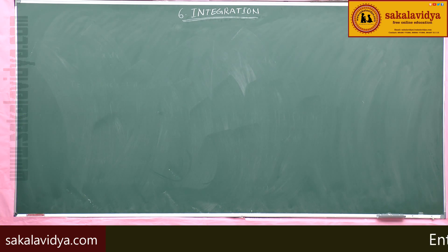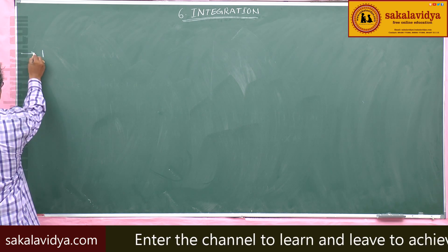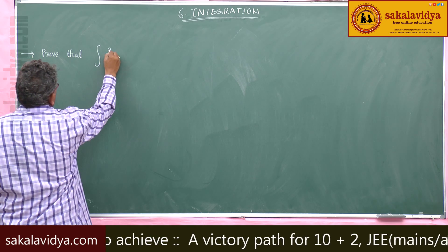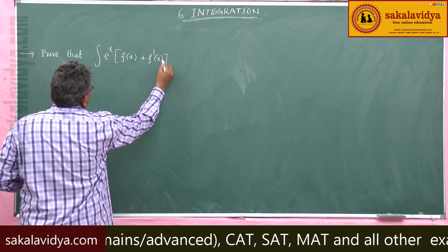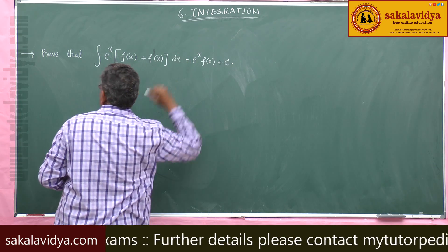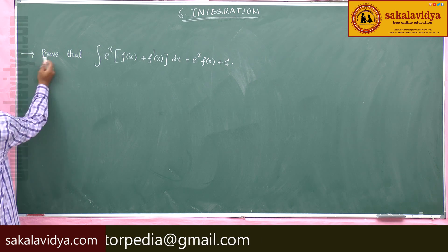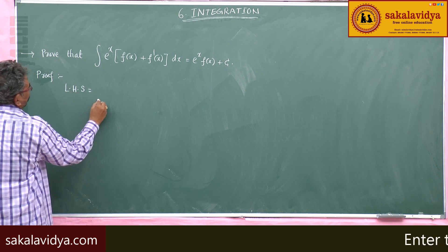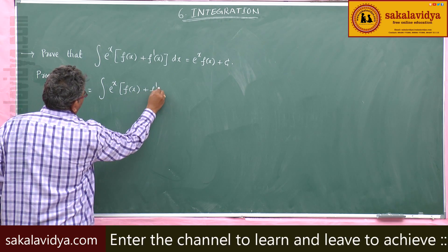Let us discuss the recurrence formula. The recurrence formula states that integral of e power x into f(x) plus f dash x dx is equal to e power x into f(x) plus c. This is a very important result. For the proof, take the left hand side: integral of e power x into f(x) plus f dash x dx.